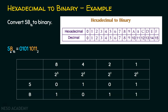For hexadecimal B, the decimal equivalent is 11. We need to get 11 using 8421: 11 equals 8 plus 3. We put 1 against 8. Since there is no 3 directly, 3 is achieved with 2 and 1, so we put 1 against 2 and 1 against 1. We don't need 4. So the binary equivalent for B is 1011. Therefore, the binary equivalent for hexadecimal 5B is 01011011 base 2.